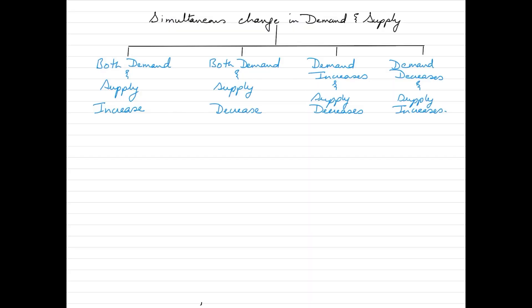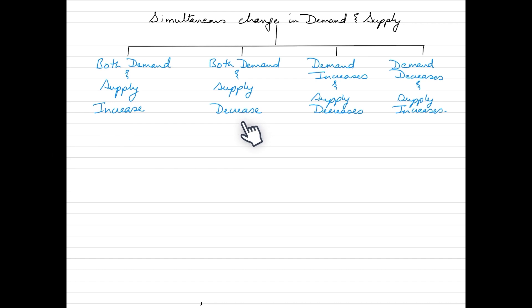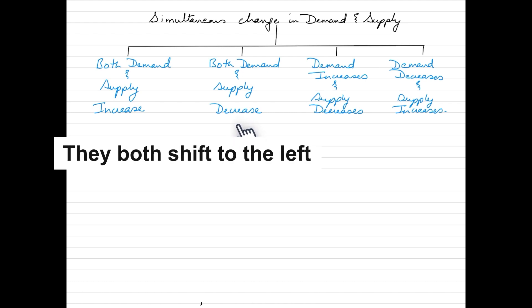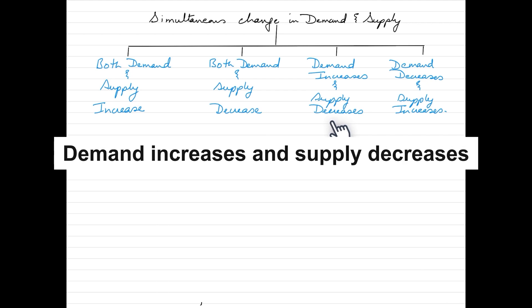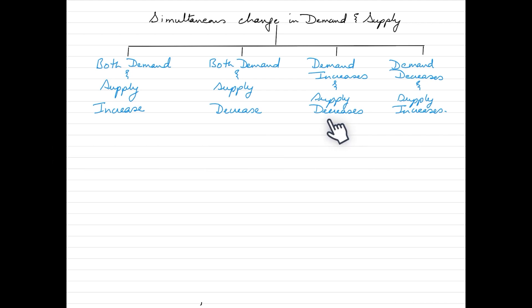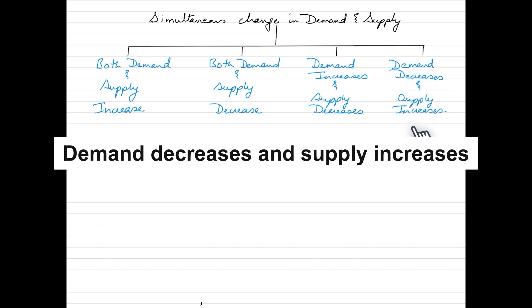As we can see on the slide, there are four different scenarios when it comes to simultaneous change in demand and supply. First, both demand and supply increase — they both shift to the right. Second, both decrease — shifting to the left. Third, demand increases and supply decreases. Fourth, the opposite: demand decreases and supply increases.